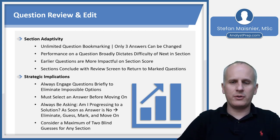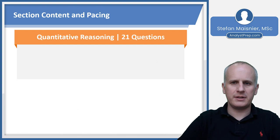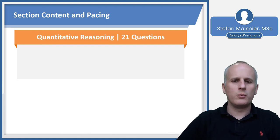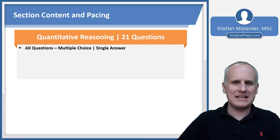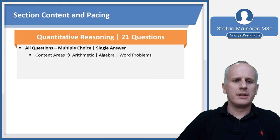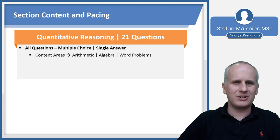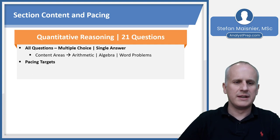Now let's talk about the actual content of each section, starting with Quantitative Reasoning, which has 21 questions — all multiple choice, single answer. The content areas are restricted to arithmetic, algebra, and word problems. There is no longer any plain geometry on the Quantitative Reasoning section of the GMAT Focus.